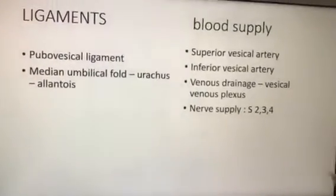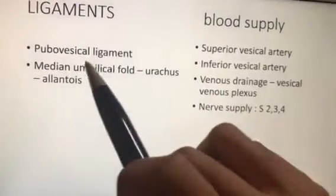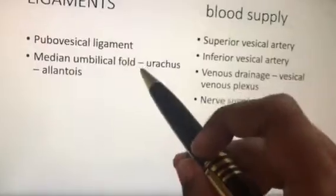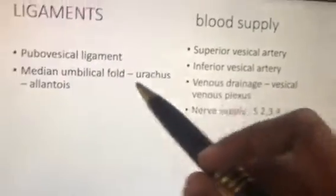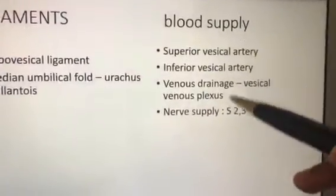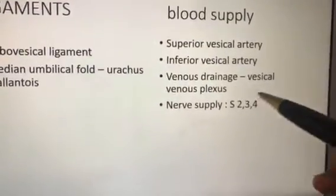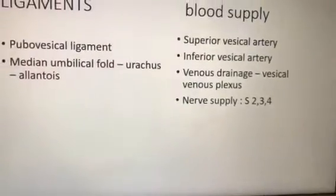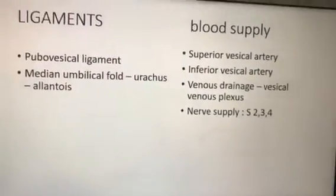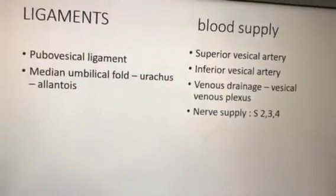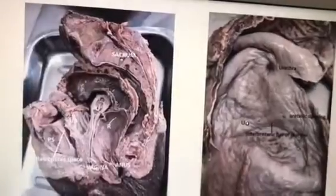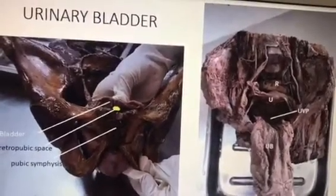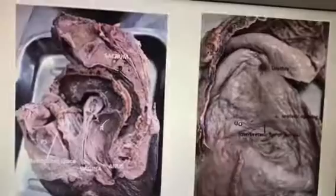Next is ligaments. At least one ligament you should write: pubis to bladder, that is called the pubovesical ligament. Blood supply and venous drainage have already been mentioned. Nerve supply is parasympathetic, S2-3-4 — at least this the student should mention. These are the key points for the urinary bladder.